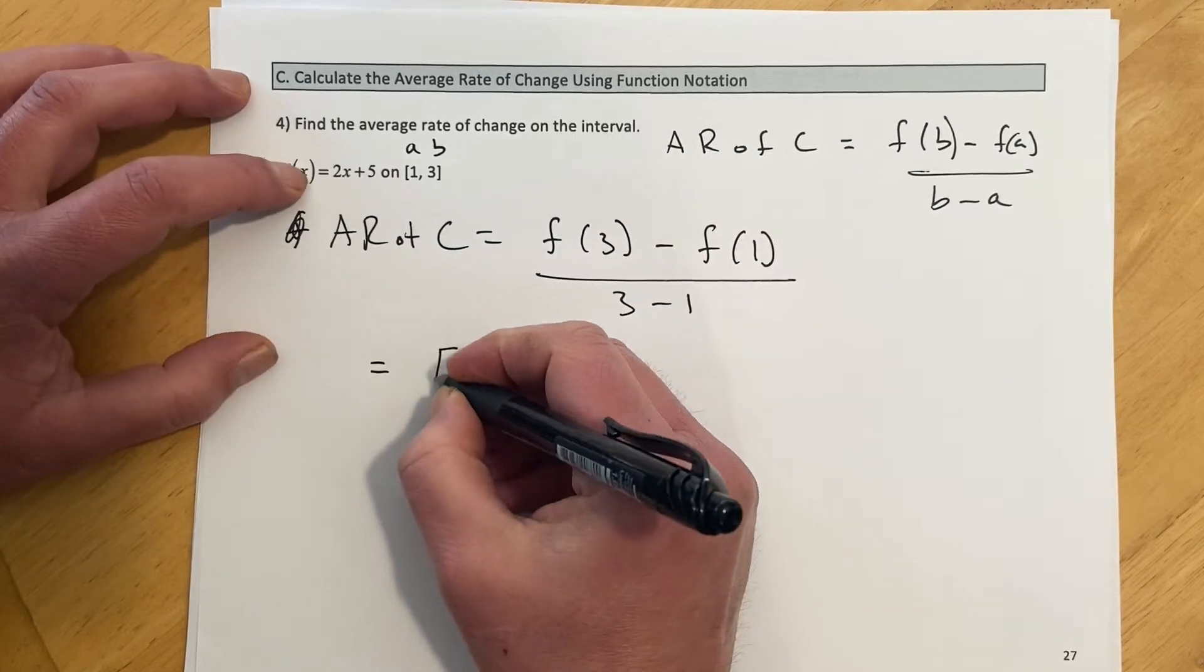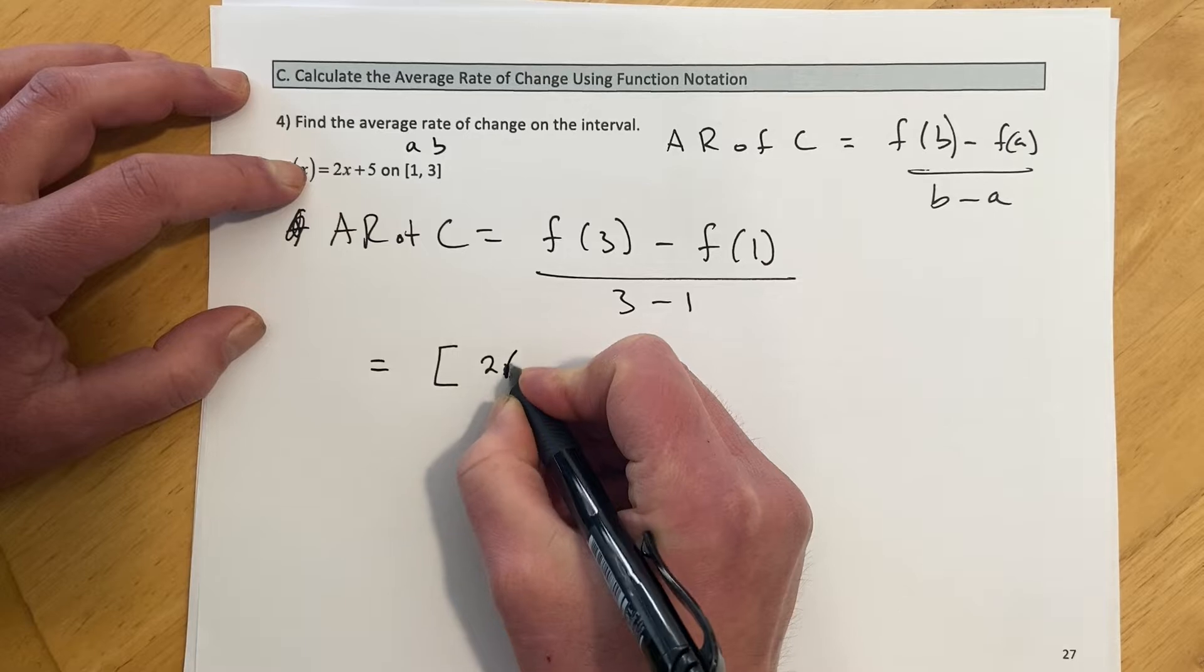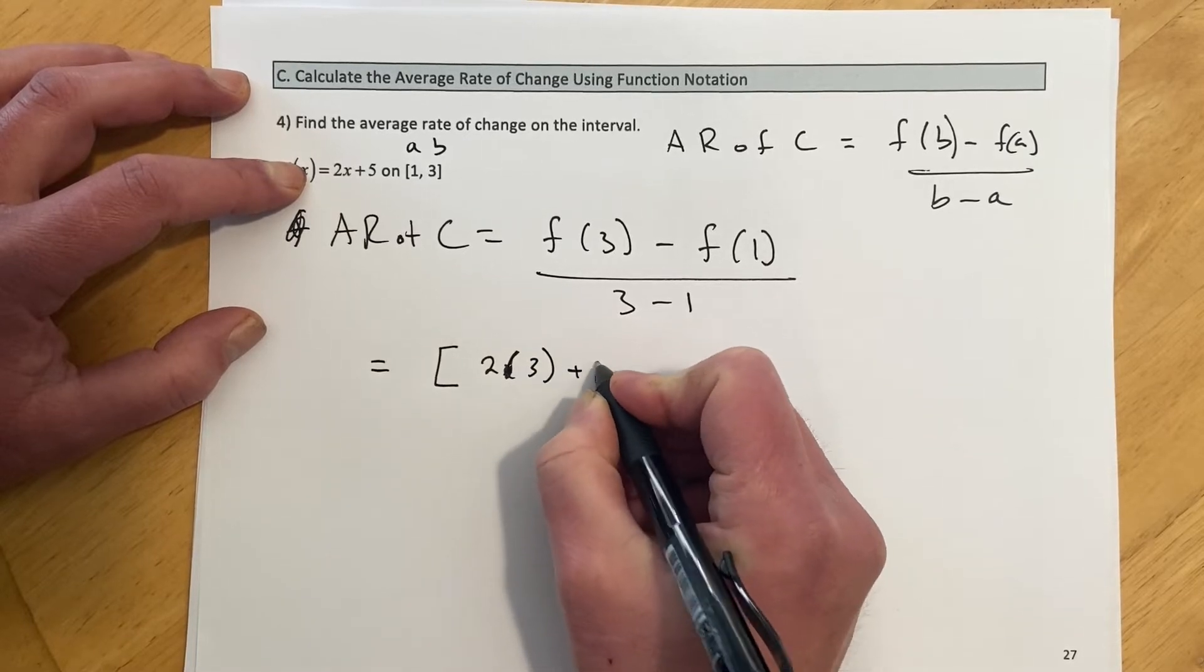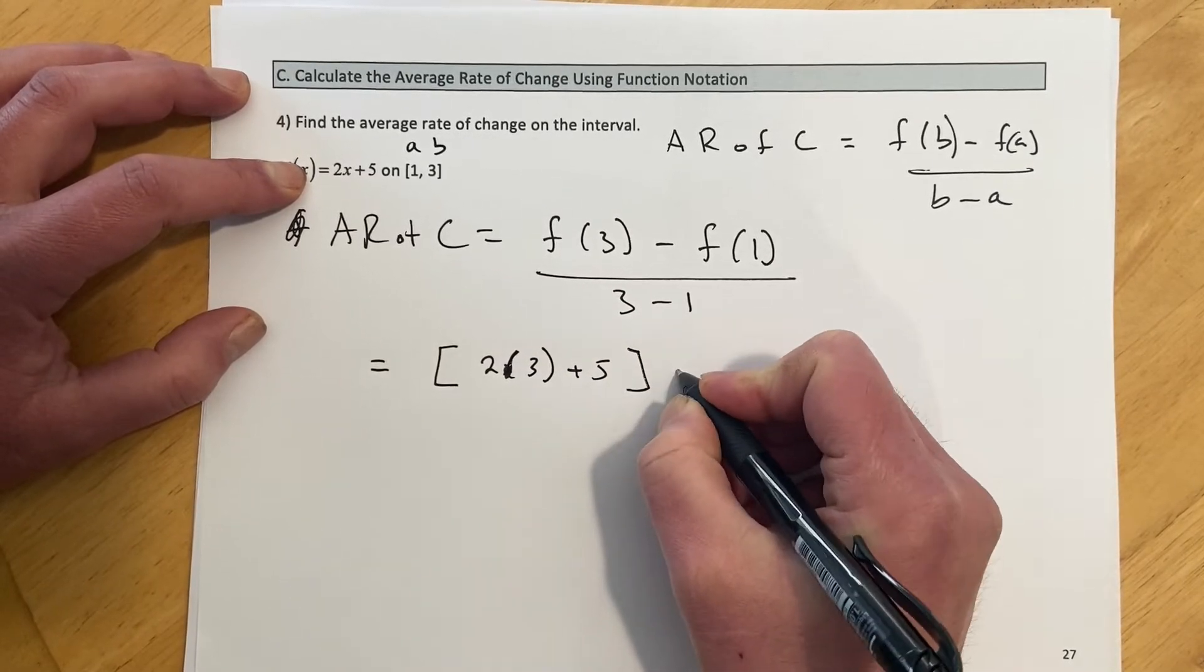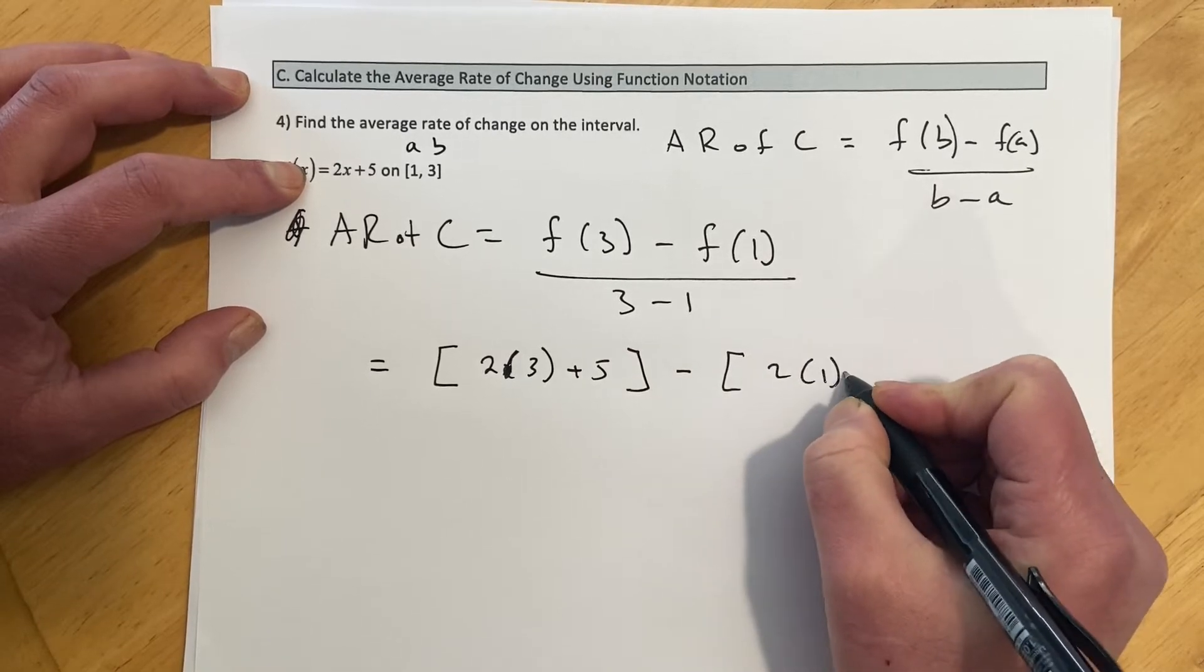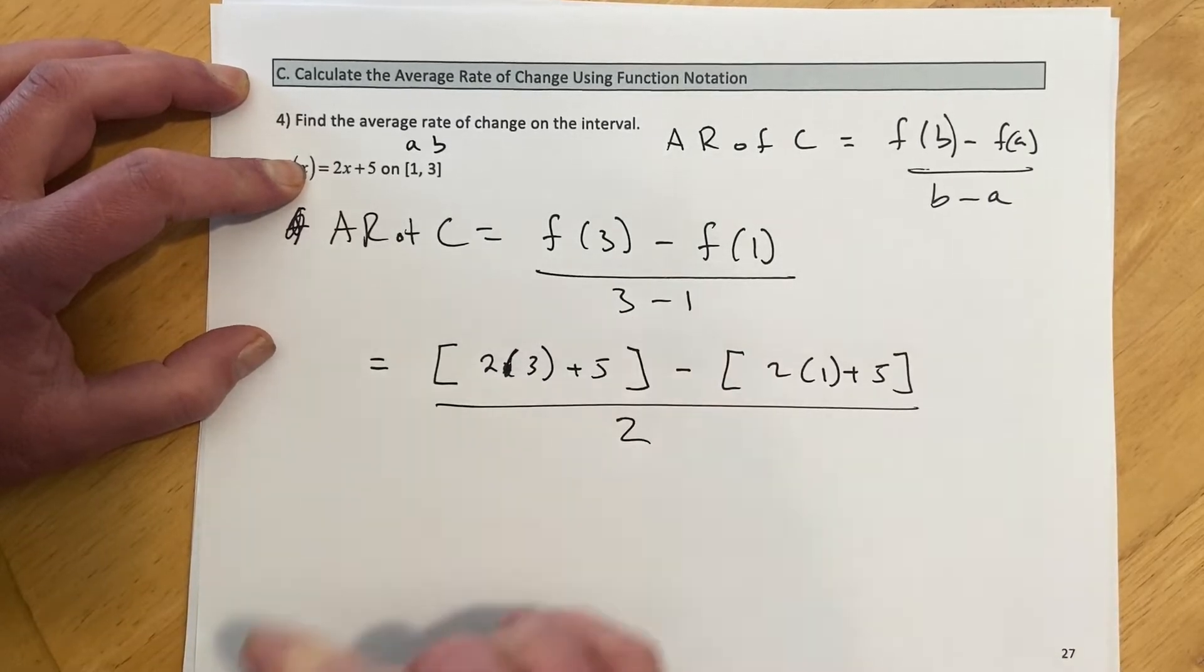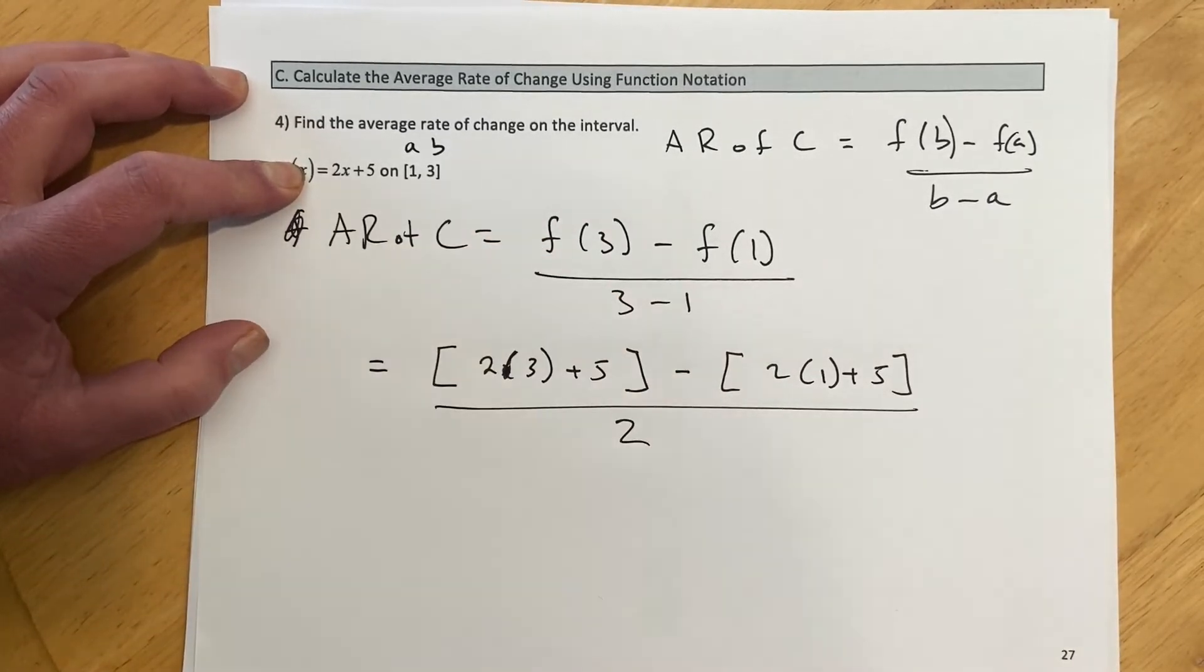So then average rate of change, we're going to have 2 times 3 plus 5 minus 2 times 1 plus 5, all over 3 minus 1 would be a 2 down there for our change in x.